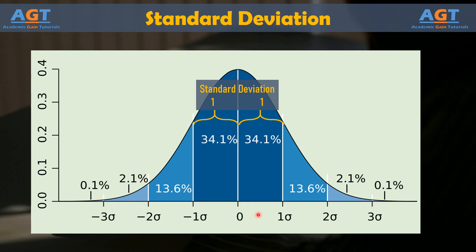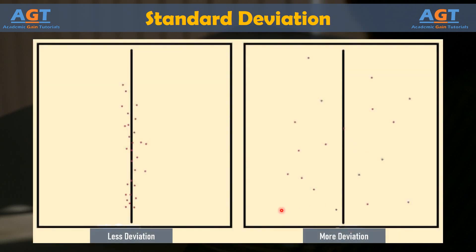These images provide a graphical representation of deviation. Imagine the vertical axis is a measure of time and the horizontal axis is a measure of temperature. The center line in each image represents the mean temperature. You can see that the temperature over time varies much more from the mean temperature in the figure on the right.